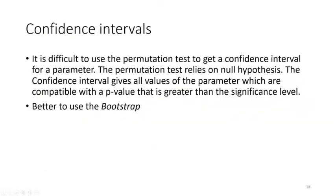What about confidence intervals? It's quite difficult to use the permutation test to get a confidence interval, because the permutation test relies on the null hypothesis. To get a confidence interval you need all values of the parameter compatible with a p-value greater than the significance level. So we tend not to use the permutation test to calculate confidence intervals — it's best to use the bootstrap.